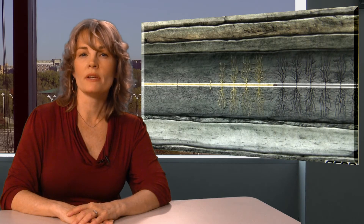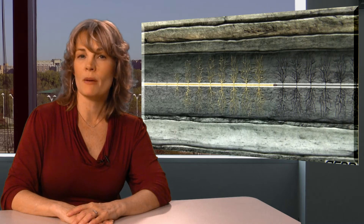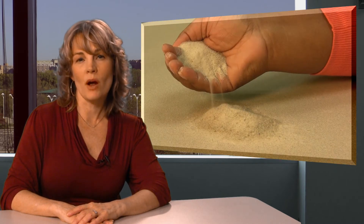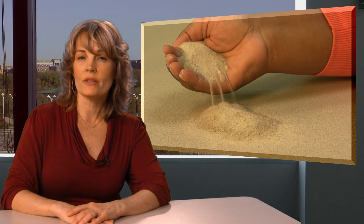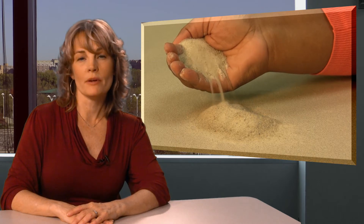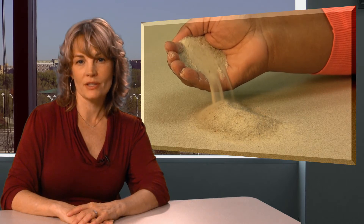The sand grains prop the fractures open as the fluid is pumped out. Optimal frac sand is round grain, relatively coarse, and holds up under tremendous pressure.